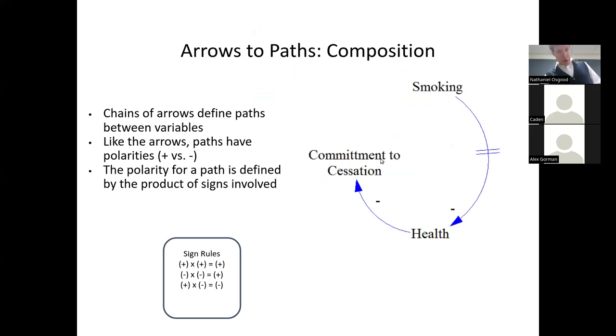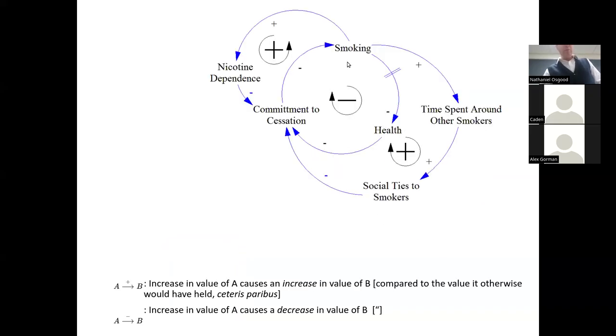And that induces some link. But by extension, there is some link from smoking to commitment to cessation here that's a plus link with a delay, I might add, that's implied by this. And one of the most important things that means is any path that's now associated with a net polarity from any starting point along that path to any destination along that path. And every loop has a polarity implied for it based on the polarities of each piece.